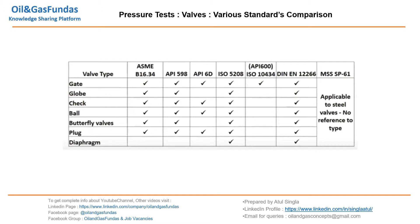Let's have a look at various standards which talk about shell pressure test. These are the valve types which we have already discussed, and these are the standards which talk about pressure test, examination, and inspection. As per ASME B16.34, this test is required for gate, globe, check, and ball valves — except for diaphragm valves. Similarly, API 598 also states this test is required, and API 6D says it is required for gate, check, ball, and plug valves.